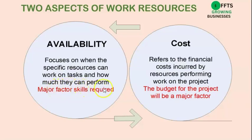The major factor here is skills required. Cost refers to the financial costs incurred by the resources performing the work on the project. The budget for the project would be a major factor. Sometimes you may have to go for less skilled resources — you may not be able to get all the skilled resources you need because you cannot pay for them, so you may have to have a mix of skilled and unskilled. These are management decisions — should you bring in a crane or do it manually? Cost is a very important factor.